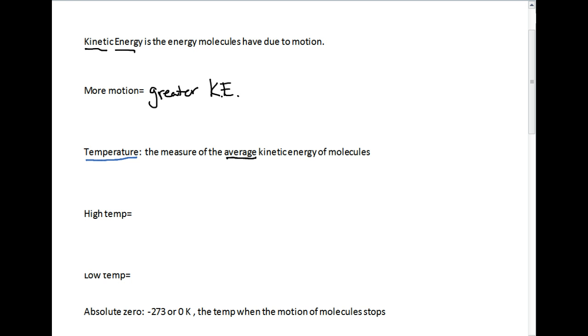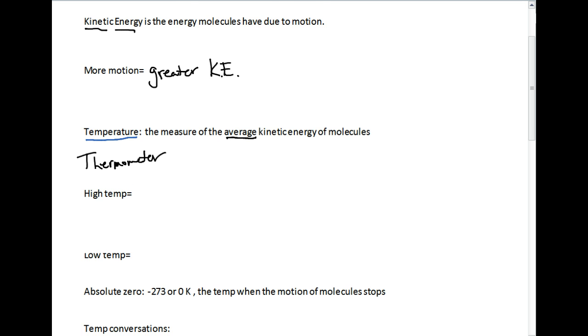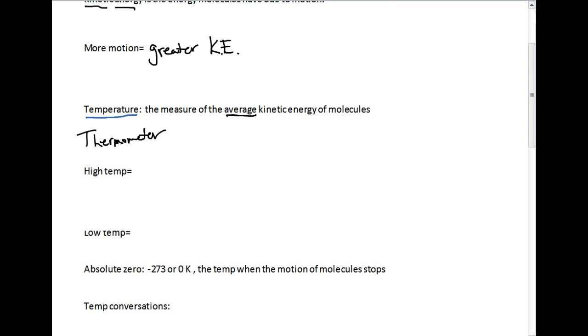We're going to use a thermometer to measure the average kinetic energy of molecules. Whether it be an old manual thermometer with spirit alcohol in it, or an electronic thermometer, they're still going to measure the average kinetic energy of molecules. Most of the time in chemistry class, we measure this temperature in degrees Celsius. Remember that boiling water will boil at 100 degrees Celsius, and it'll freeze at 0 degrees Celsius.